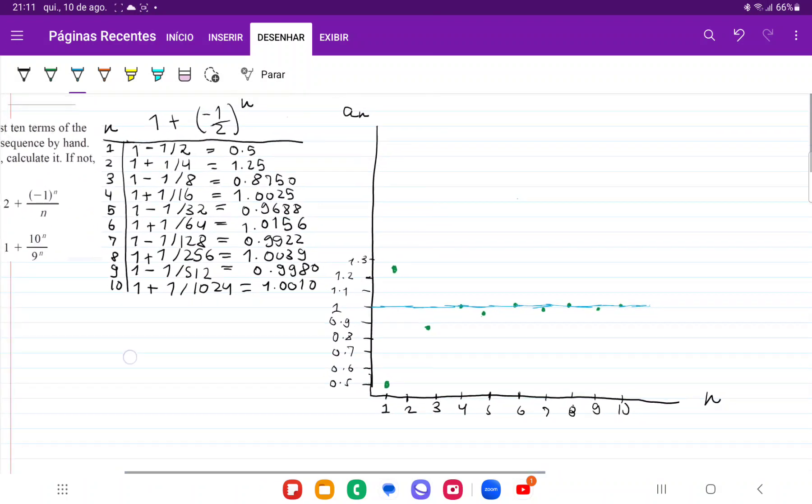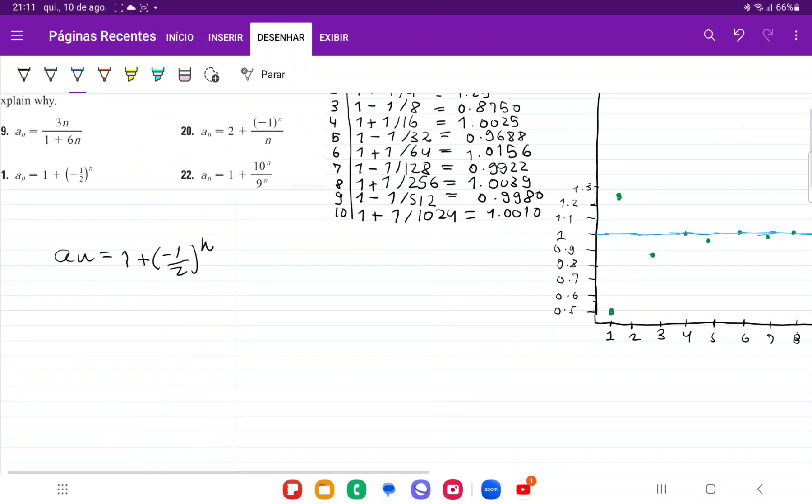But now we have to prove it, right? So let's go ahead and do that. We're going to take the limit as n approaches infinity of 1 plus, and we're just going to separate this, minus 1. Actually, we won't separate it. So we're going to go minus 1 half to the power of n.